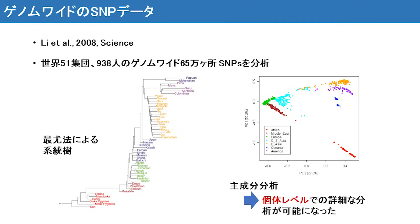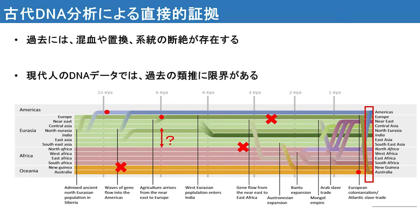SNPを用いた研究が行われ始めました。こちらは2008年のサイエンスに載ったリー・エトワールですけれども、世界51集団約1000人から取得したゲノムワイドSNPデータを用いた系統樹及び主成分分析の結果です。これを見ますと集団の系統関係を明瞭に見ることができますし、主成分分析では個体レベルでの分析が可能となっています。